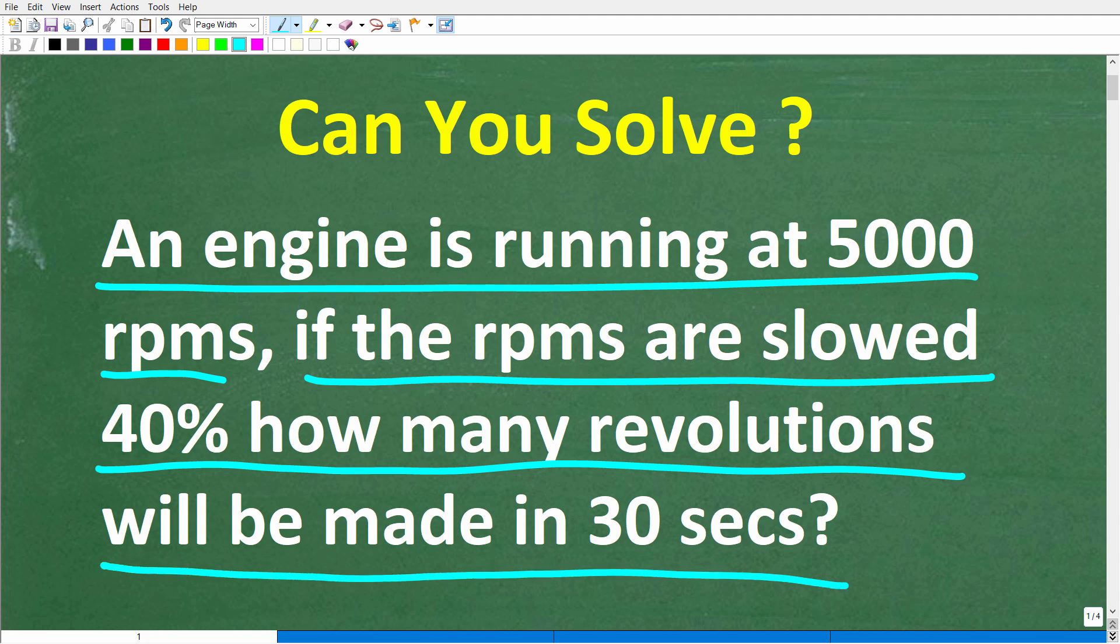All right, now just in case you don't know, RPM stands for revolutions per minute. So 5,000 RPMs means the engine turns 5,000 times in one minute.